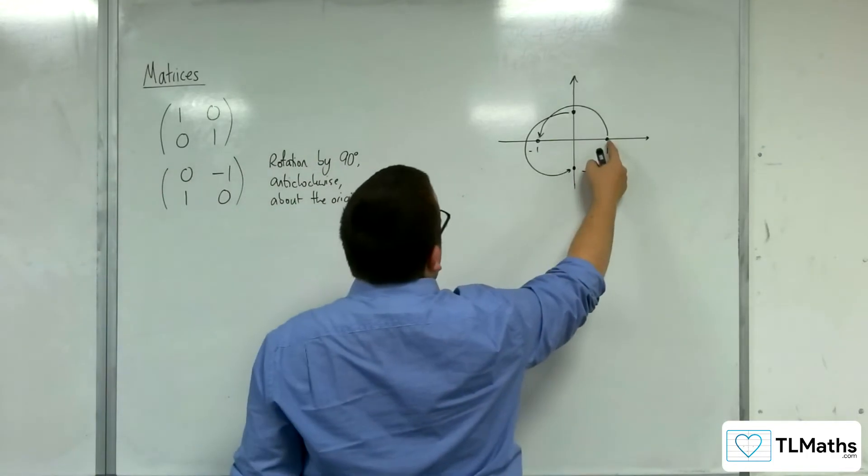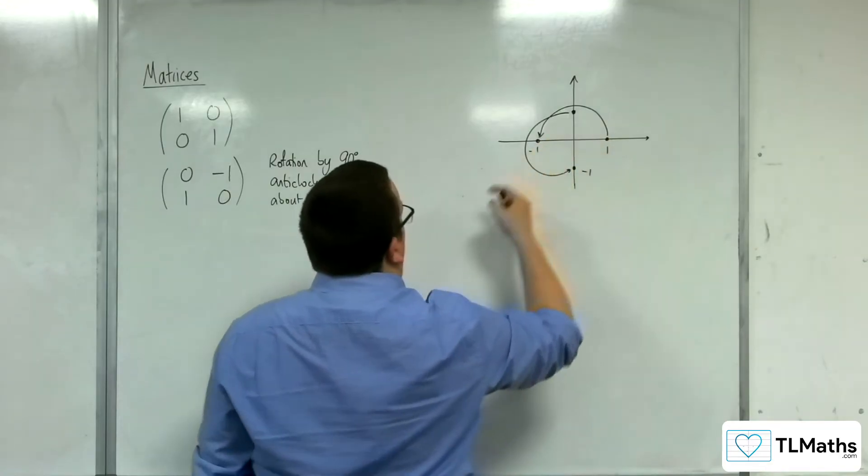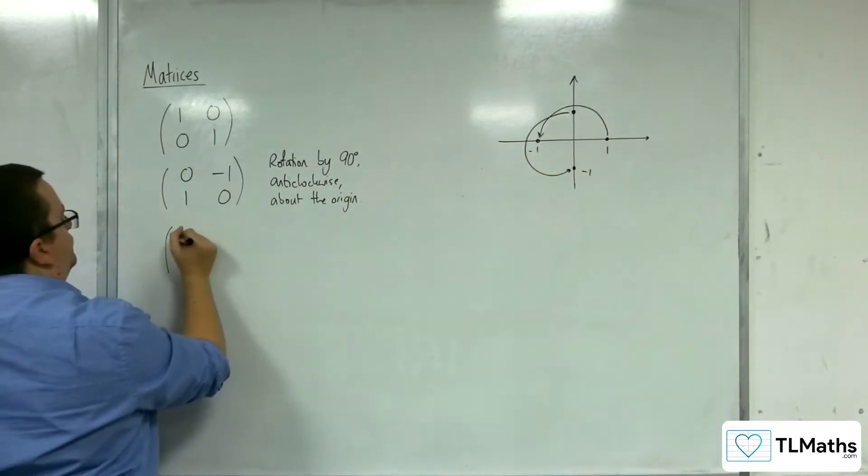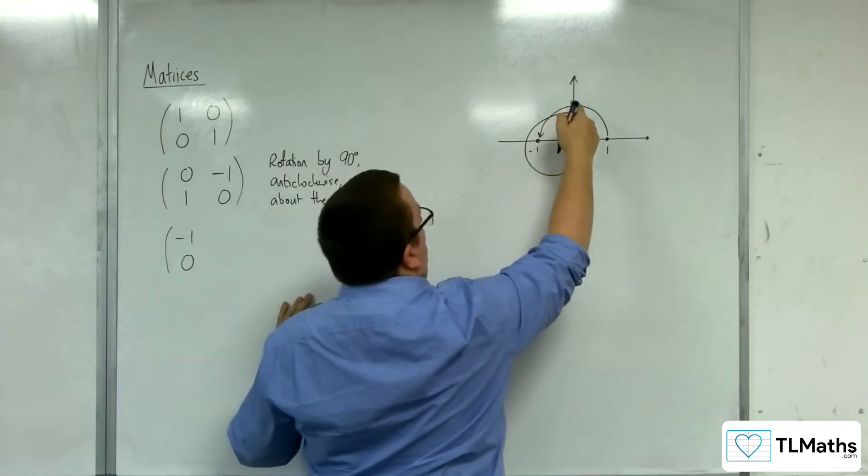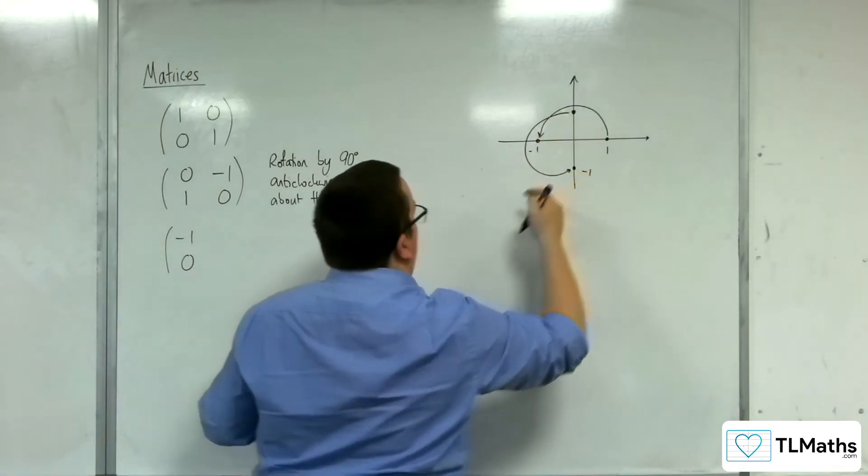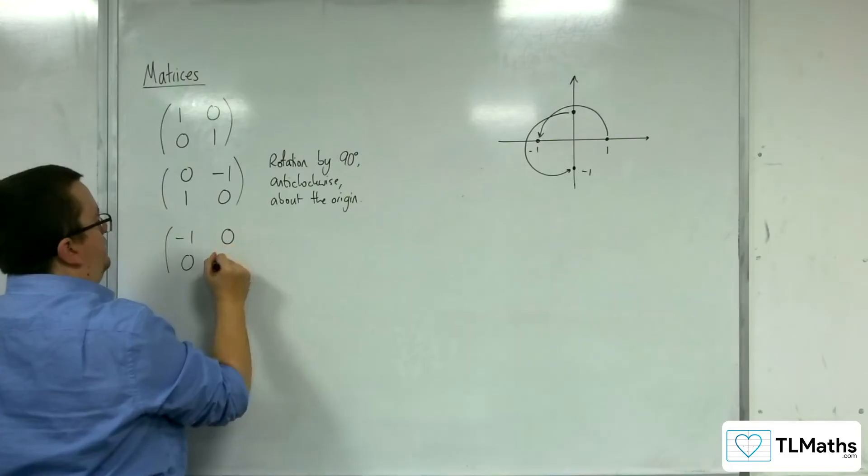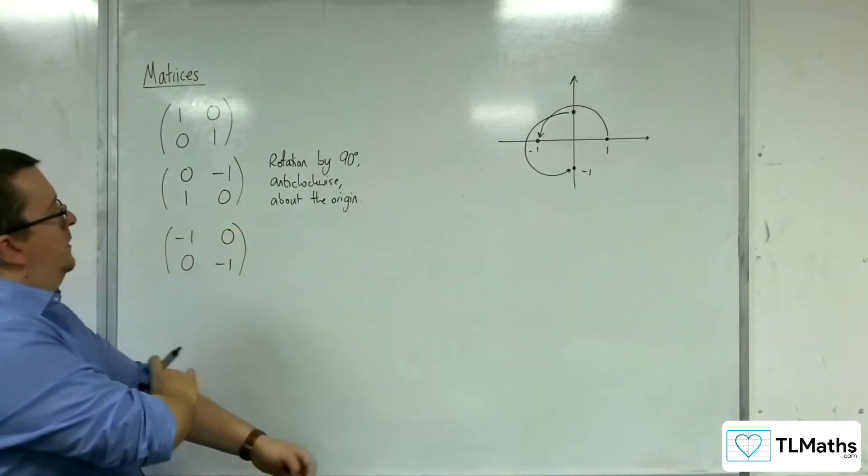So the point that is at 1, 0 would go to minus 1, 0. And the point that is at 0, 1 will go round to 0, minus 1.